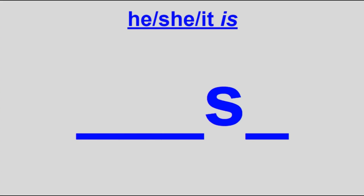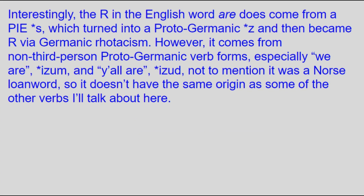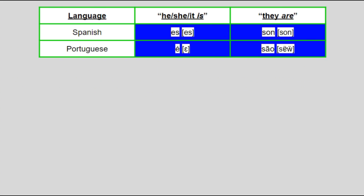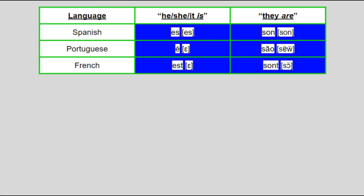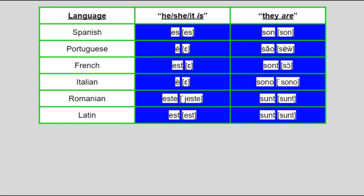So now we'll get into how ablaut affected the modern Indo-European languages, starting with probably the most straightforward example: present tense conjugations of the verb BE. In several Indo-European languages, there's an interesting dichotomy where the conjugation for 'he/she/it is' has an S sound at or near the end of the word, while for 'they are' the S sound is at the beginning of the word. This pattern is most widespread in the Romance languages — Spanish est and son, Portuguese é and são, French est and sont, Italian è and sono, and Romanian ieste and sunt — all of which come from Latin est and sunt. The arrangement can also be found in German ist and sind, Polish jest and są, and even Sanskrit asti and santi.